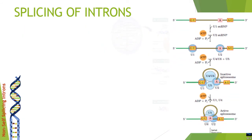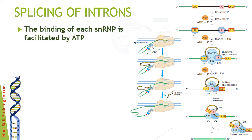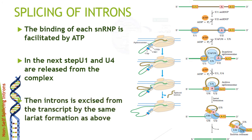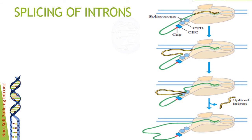The spliceosome contains five different RNAs and about 50 different proteins — as complex as the ribosome itself. Splicing proceeds via lariat formation, similar to adenosine-dependent self-splicing. The binding of snRNPs is facilitated by ATP, making this an ATP-dependent process. As you can see in the diagram, the cap is already attached via CBC to the CTD domain of RNA polymerase, and the spliceosome also aggregates near this phosphorylated CTD. As the three-prime end is being polyadenylated, the spliceosome simultaneously excises the introns — making this a co-transcriptional process.